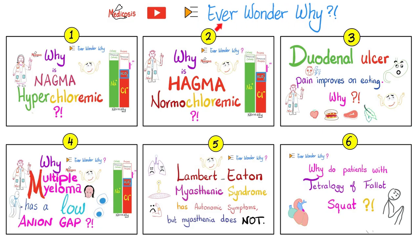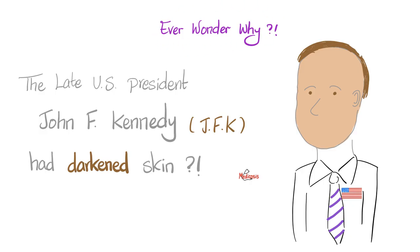Today is the seventh video in this lovely playlist. In the first video, we talked about the story of NAGMA and why is NAGMA hyperchloremic — whenever I have normal anion gap metabolic acidosis, my chloride level in the blood is going to be high. The second video was about why HAGMA is normochloremic. In the third video, I explained why duodenal ulcer pain improves when you eat, unlike gastric ulcer. In the fourth video, we talked about why multiple myeloma has a low anion gap. In the fifth video, we discussed why Lambert-Eaton myasthenic syndrome has autonomic symptoms but myasthenia gravis does not. And in the last video, I explained why patients with tetralogy of Fallot squat and reverse the flow. Have you ever wondered why the late United States President John F. Kennedy had darkened skin?